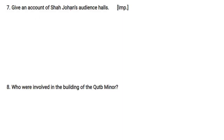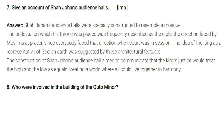Question: Give an account of Shah Jahan's audience halls. Shah Jahan's audience halls were specially constructed to resemble a mosque. The pedestal on which his throne was placed was frequently described as the Qibla — the direction faced by Muslims at prayer — since everybody faced that direction when court was in session. The idea of the king as a representative of God on earth was suggested by these architectural features. The construction aimed to communicate that the king's justice would treat the high and the low as equals, creating a world where all could live together in harmony.